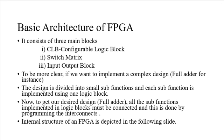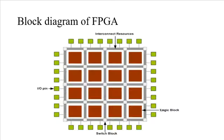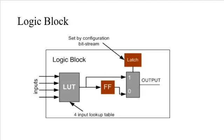The internal structure of an FPGA is depicted in the following diagram. In the block diagram, you are going to have the logic block — same as the configurable logic block — interconnection resources, which are the interconnects, the switch block, which is the switch matrix, and the input-output pin blocks. Each one will be discussed in detail. The logic block is as shown.